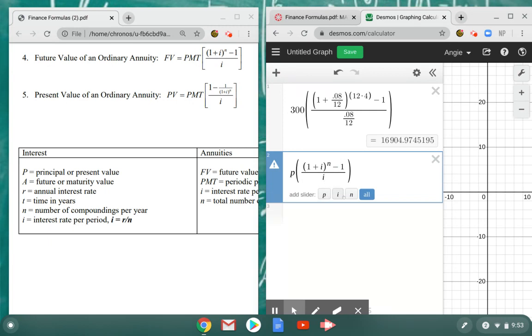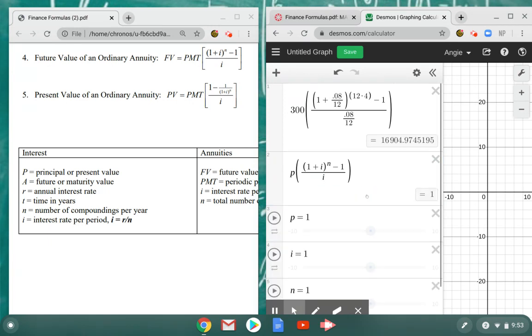I've set this formula up with the variables inside of it. It says, do you want to add sliders for these variables? I'm going to click all. Now it gives me the option, but I'm not actually going to use the sliders because that's really inefficient.